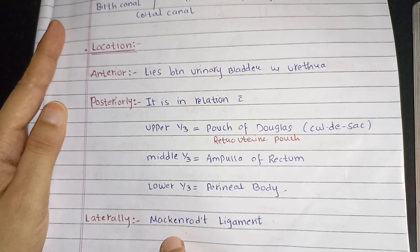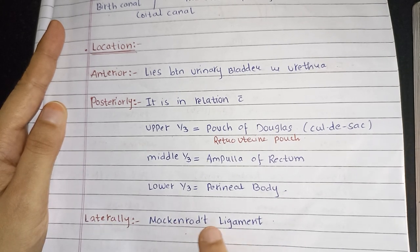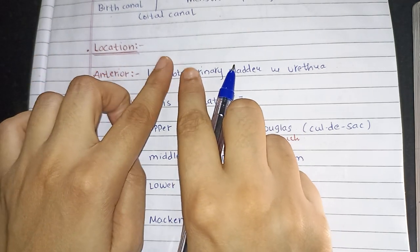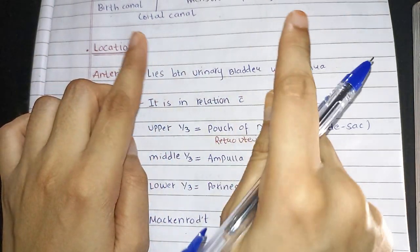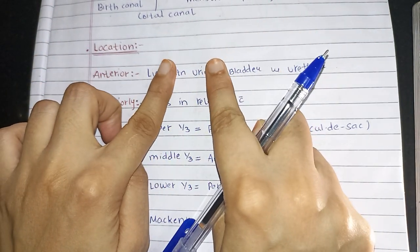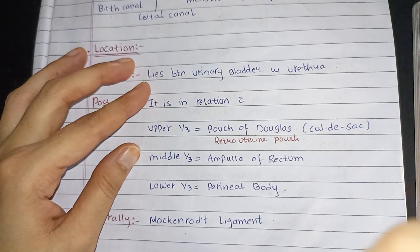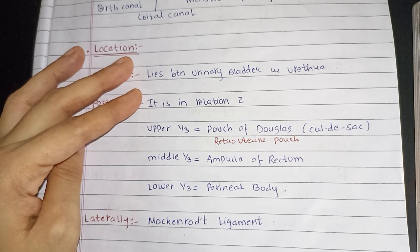Laterally, it is lined by Mackenrodt's ligament. If this is the vagina, the ligament lies transversely to the vagina — that is what the Mackenrodt's ligament is, which is lying laterally to the vagina.